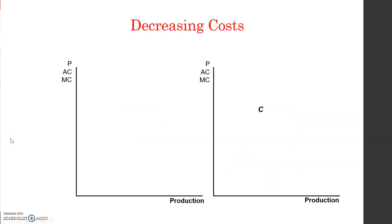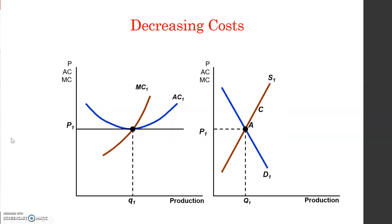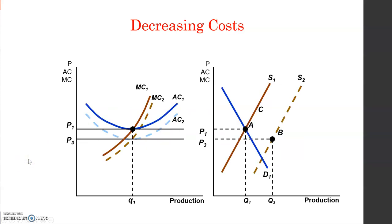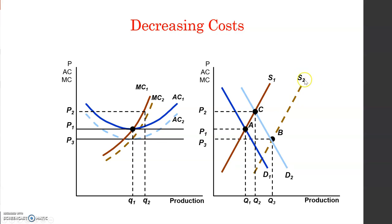Now let's look at the case of a decreasing cost industry. We start from the original situation with zero profits. Demand increases and shifts to the right, so there are positive profits for the firm because the price has risen. This attracts more suppliers to the market, moving supply from S1 to S2.